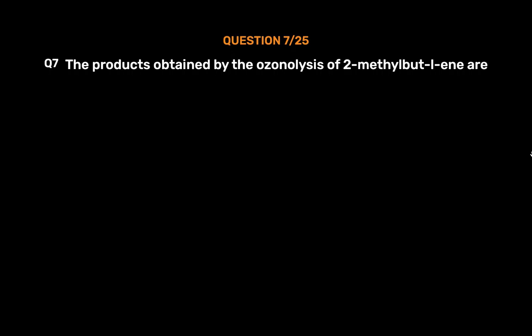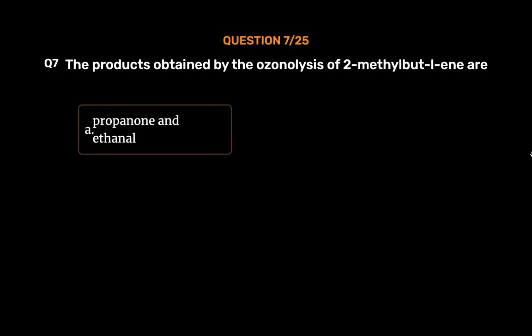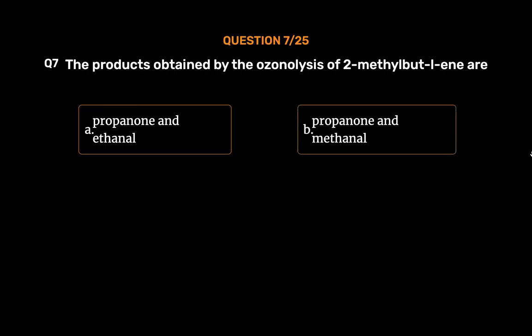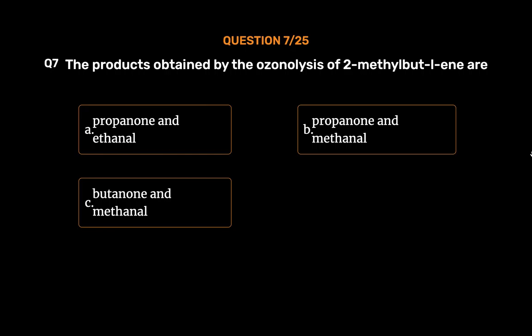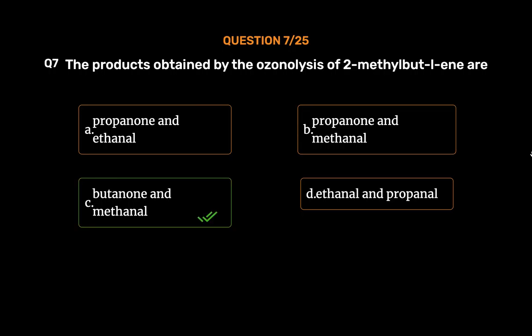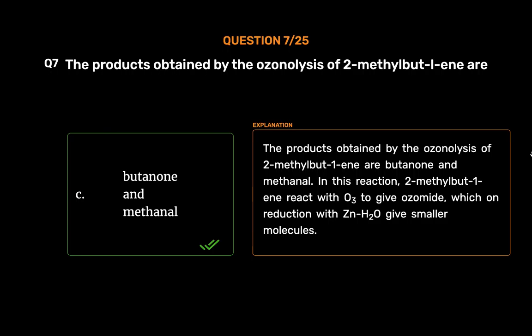Question number 7. The products obtained by the ozonolysis of 2-methyl-but-1-ene are: Option A, propanone and ethanal; Option B, propanone and ethanal; Option C, butanone and ethanal; Option D, ethanal and propanol. The correct answer is Option C, butanone and ethanal. In this reaction, 2-methyl-but-1-ene reacts with O3 to give an ozonide, which on reduction with Zn/H2O gives smaller molecules.